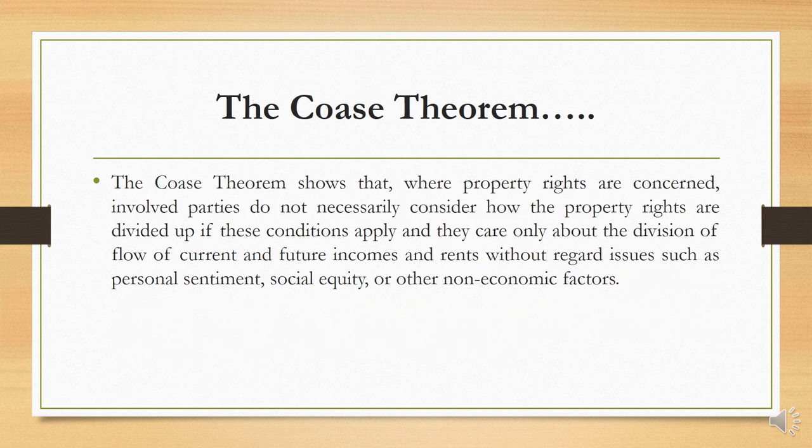The Coase Theorem shows that where property rights are concerned, involved parties will not necessarily consider how the property rights are divided up if these conditions apply, and they care only about the division of future incomes and rents without regard to issues such as personal sentiment, social dignity, or other non-economic factors.